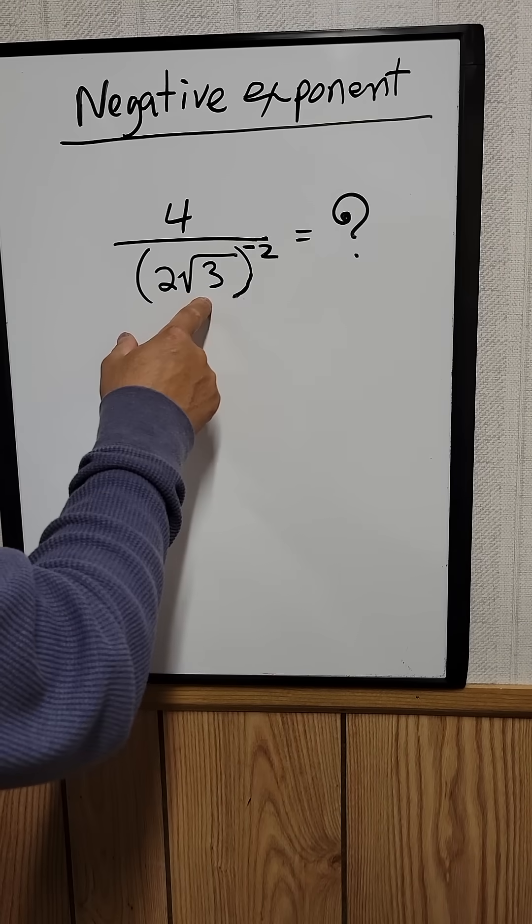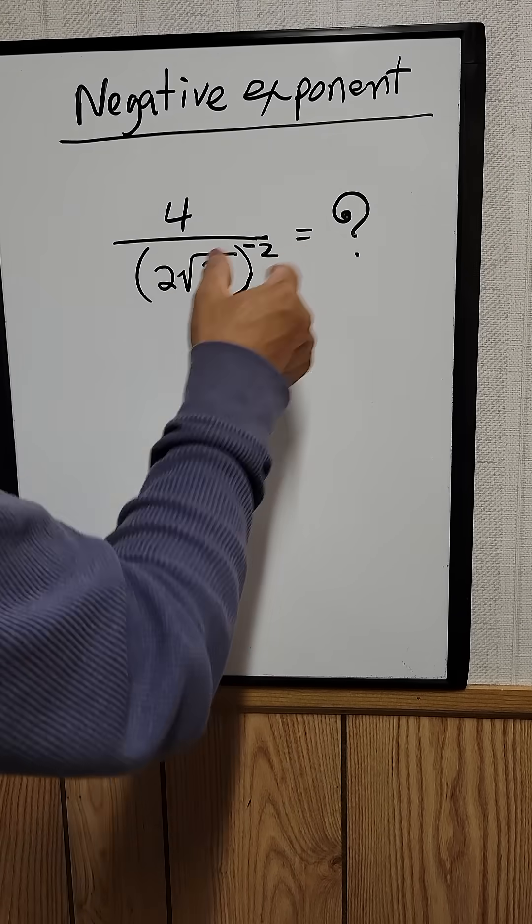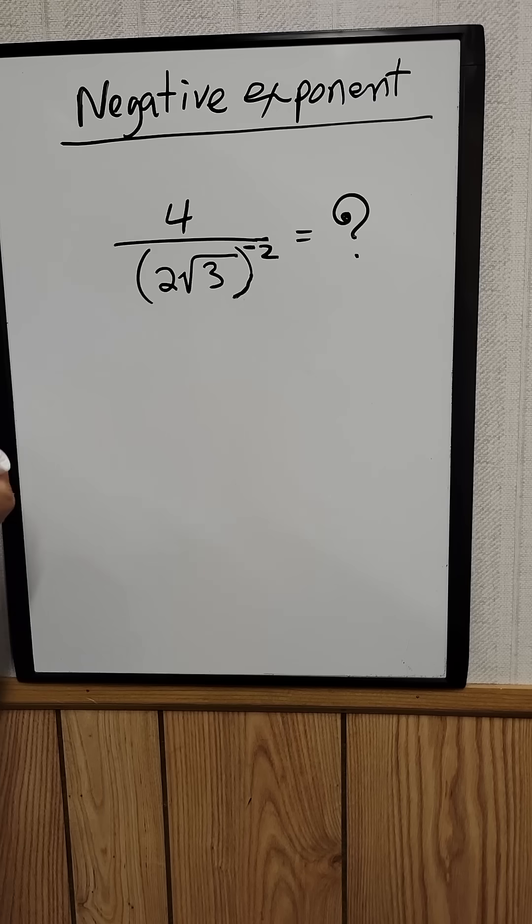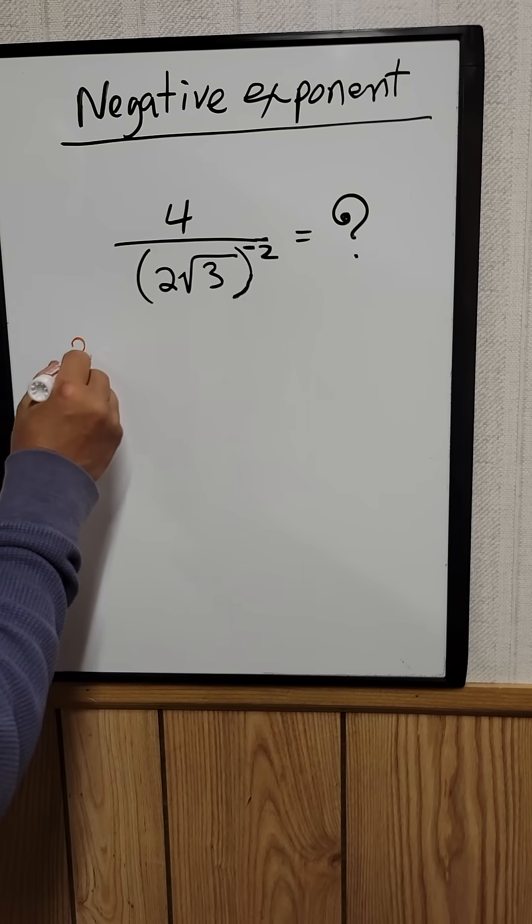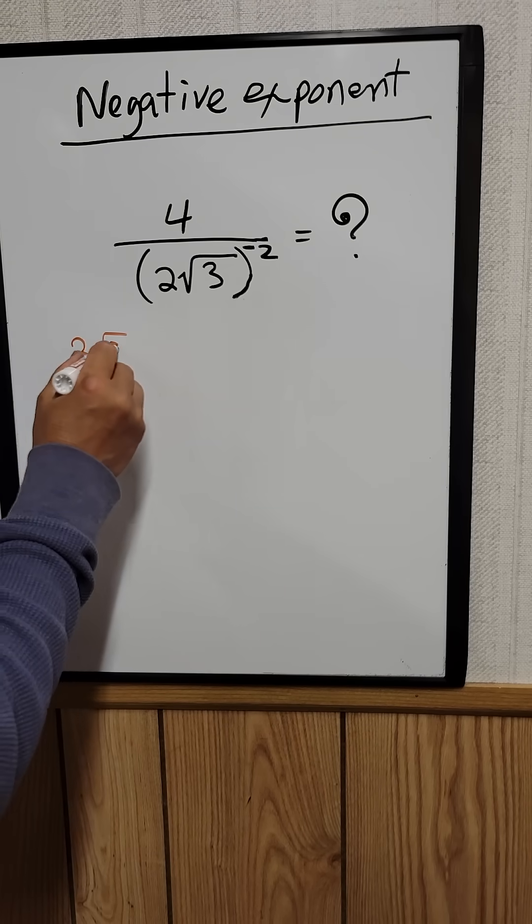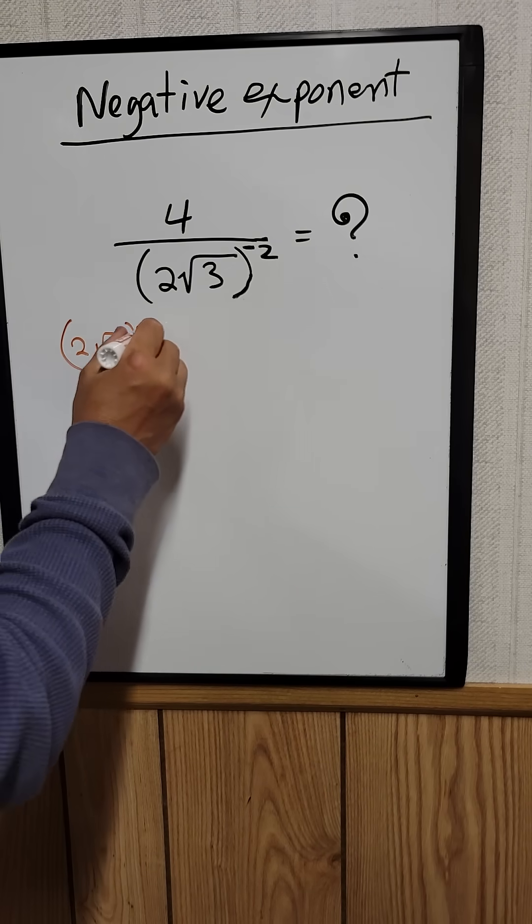4 divided by 2 times the square root of 3 raised to the negative 2 equals what? Let's work with the denominator first. So 2 times the square root of 3 raised to the negative 2.